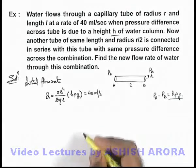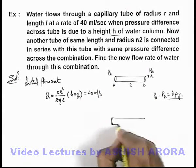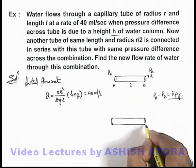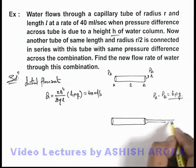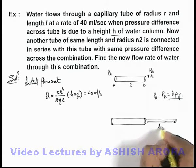Now in the second part of the problem, there is another tube of radius r/2 connected in series with this. A narrow tube is connected with this which is having radius half but length is equal.